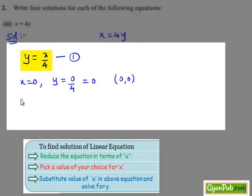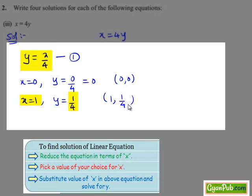Now let us put x equals to 1 in equation number 1. Then we get y equals to 1 divided by 4. Hence the ordered pair (1, 1/4) is also the solution of equation number 1.